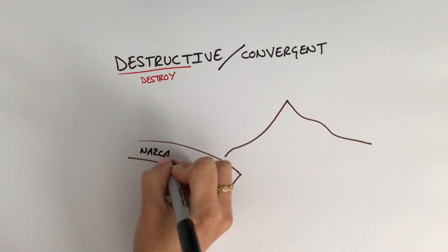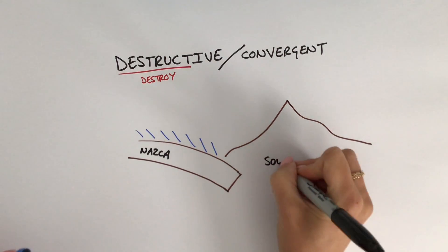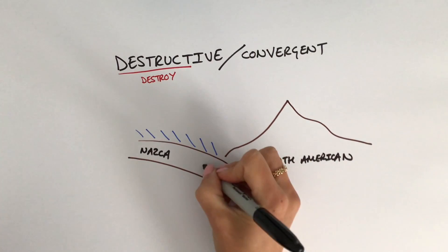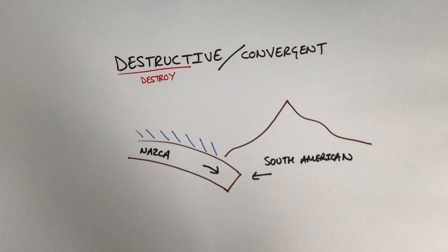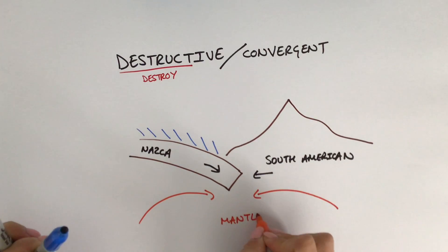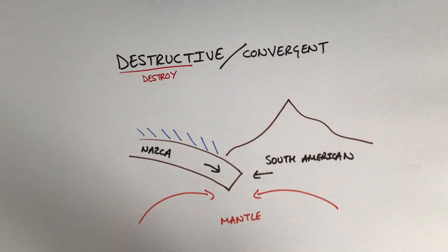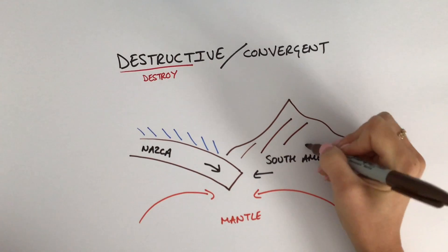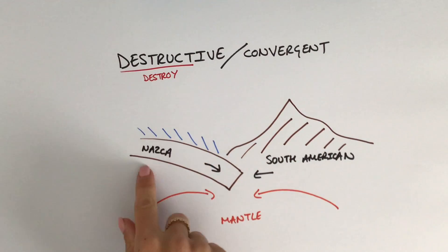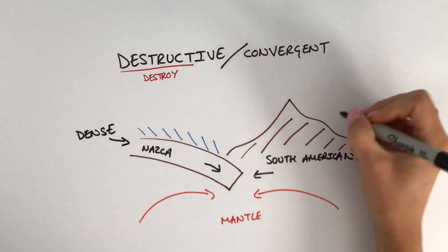I'm going to give you the example of the Nazca plate, which is actually an oceanic plate, placed next to the South American plate. These two tectonic plates actually move towards each other because the convection currents deep below the earth's crust in the mantle layer encourage them to move in that direction — they are converging. This is why it was so important to go through the different types of crust, because here we have the South American plate as continental crust and the Nazca plate as oceanic crust.